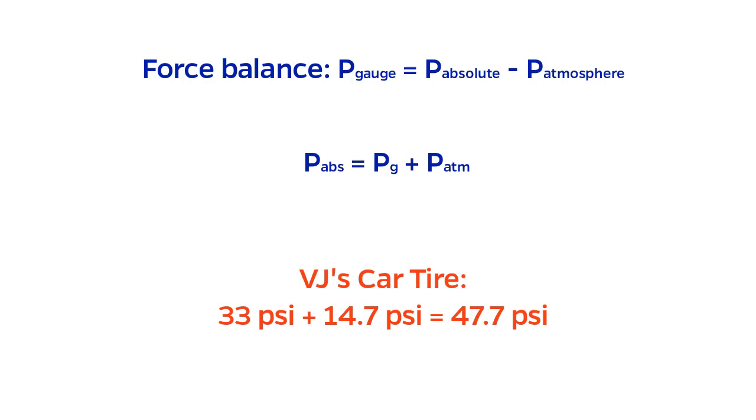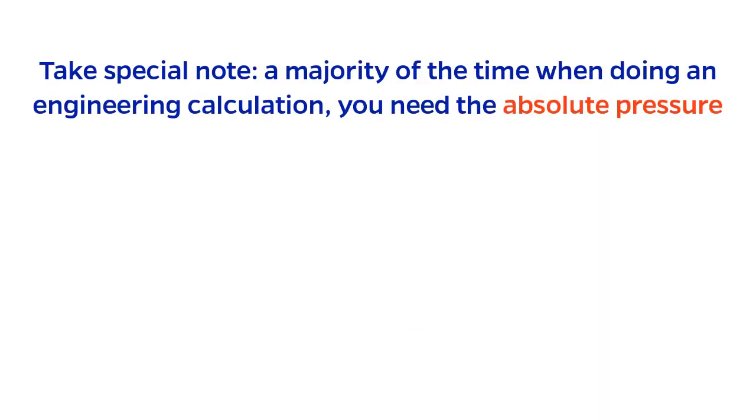For my car tire, because atmospheric pressure is 14.7 PSI, the true pressure inside is 47.7 PSI. Make a special mental note here, an overwhelming majority of the time in engineering, when you need to use pressure in an equation, you'll need the absolute pressure.